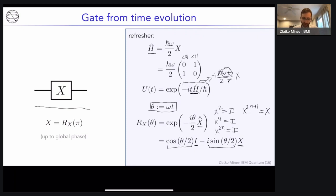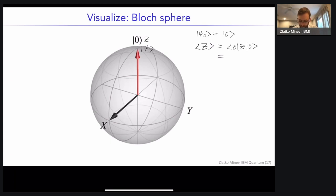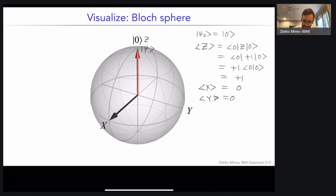Imagine the initial state ψ is the ground state |0⟩. In the Bloch sphere picture, this is depicted as a vector pointing up along +Z, because the expectation value of Z for |0⟩ is ⟨0|Z|0⟩ = +1, while the expectation values of X and Y are both zero. The zero state is therefore a Bloch vector pointing from the origin to the unit sphere in the vertical Z direction. The X operator is represented as a black arrow along the X axis — the axis around which our rotation will occur.